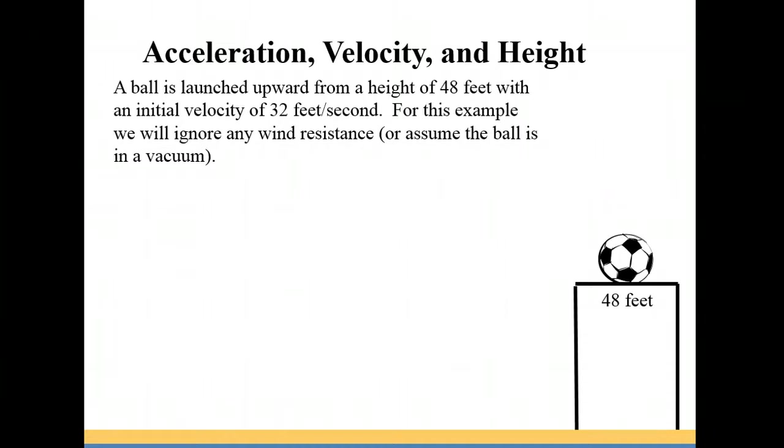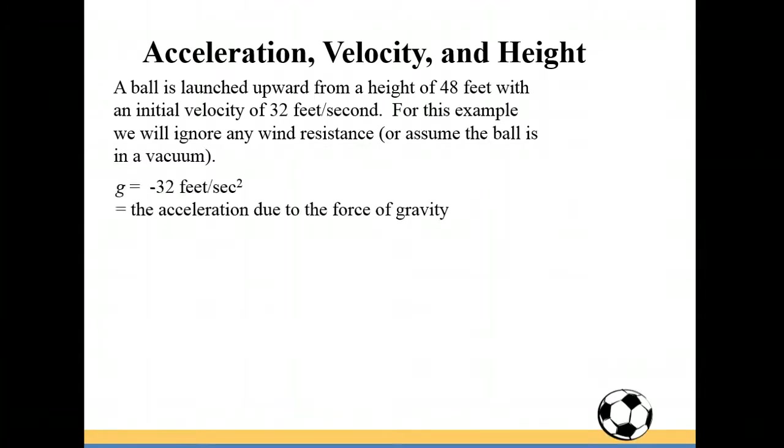A ball is launched upward from a height of 48 feet with an initial velocity of 32 feet per second. For this example we're going to ignore any wind resistance or assume that the ball is in a vacuum. The ball is going to start off being launched from a platform that's 48 feet off the ground. The ball is going to rise in the air and then after a certain amount of time it's going to come back down to the ground due to the force of gravity.